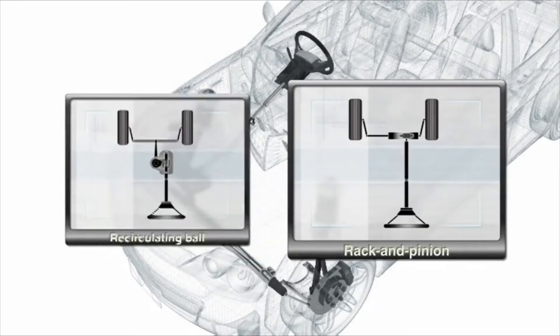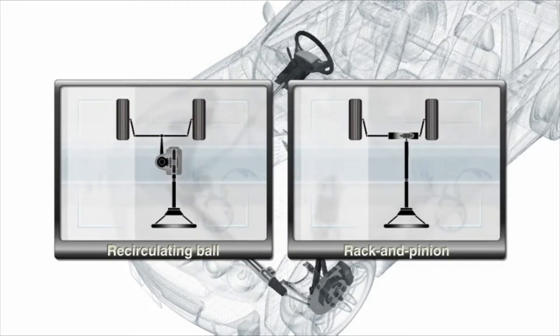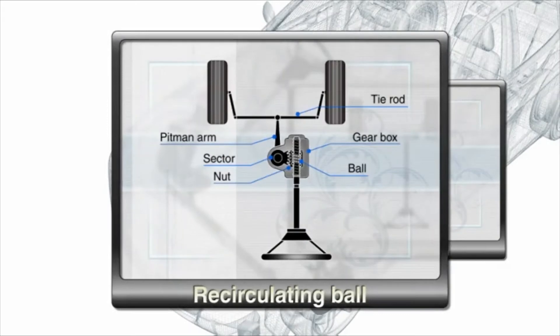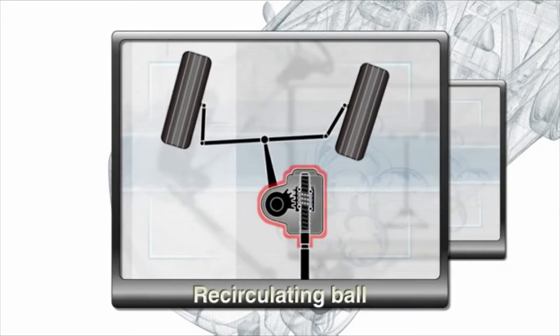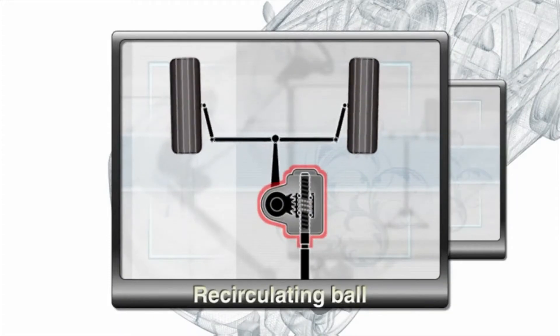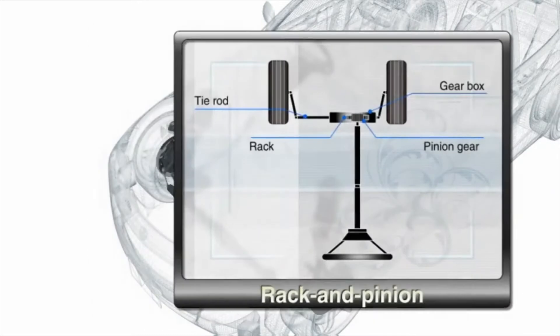There are two types of steering systems: the recirculating ball and the rack and pinion. In the recirculating ball design, the worm gear is filled with metal ball bearings. The nut covers the balls and engages the sector shaft.